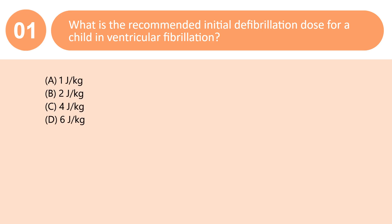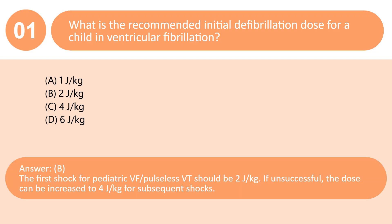What is the recommended initial defibrillation dose for a child in ventricular fibrillation? A. 1 J/kg. B. 2 J/kg. C. 4 J/kg. D. 6 J/kg. Answer: B. The first shock for pediatric VF/pulseless VT should be 2 J/kg. If unsuccessful, the dose can be increased to 4 J/kg for subsequent shocks.